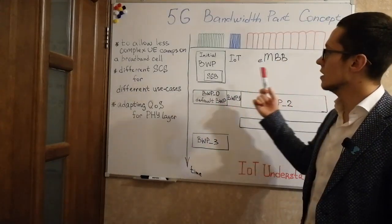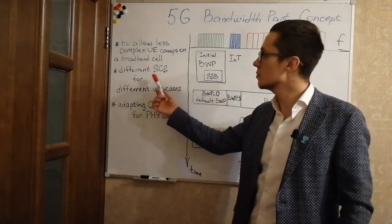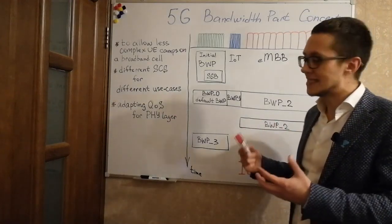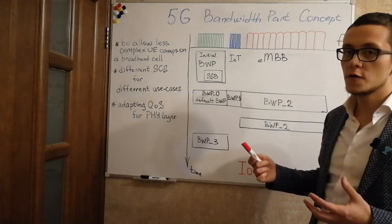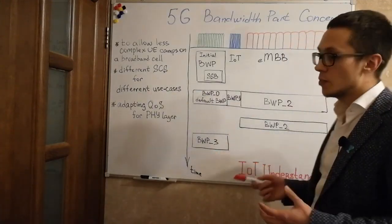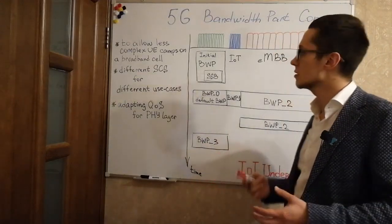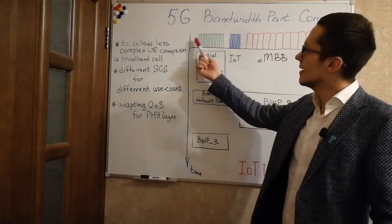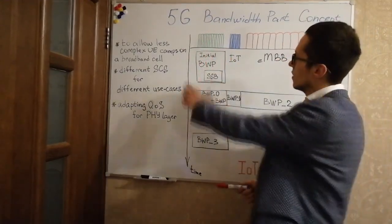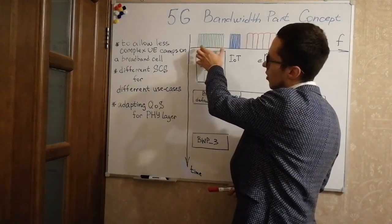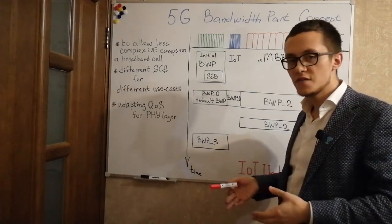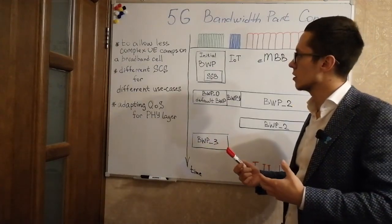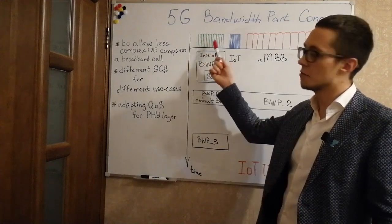Another aspect behind the bandwidth part concept is to have different subcarrier spacing for different use cases. It is a kind of adapting quality of service for the physical layer. For example, in idle mode we can configure user equipment to operate with narrow subcarrier spacing, with a narrow bandwidth part, in order to save battery power and to have a good connection in idle mode.